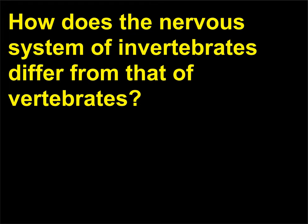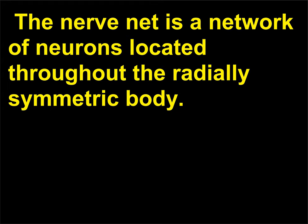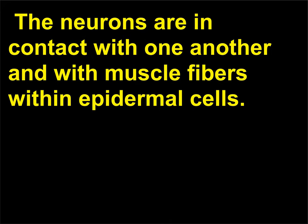How does the nervous system of invertebrates differ from that of vertebrates? The least complex nervous system is the nerve net of cnidarians such as hydras. The nerve net is a network of neurons located throughout the radially symmetric body. The neurons are in contact with one another and with muscle fibers within epidermal cells. These animals lack a head and brain.